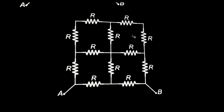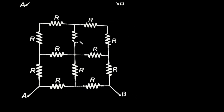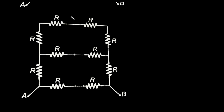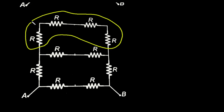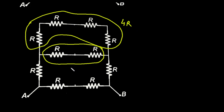So let's remove this resistance from here. Now we can easily solve this. This will be R plus R plus R plus R, which is simply 4R. And this will be simply 2R.